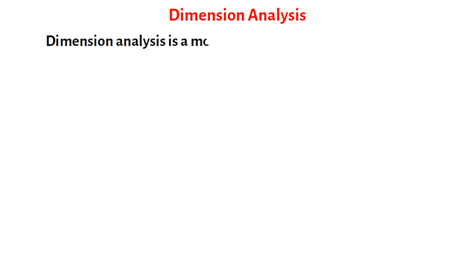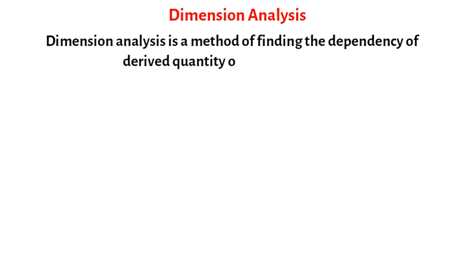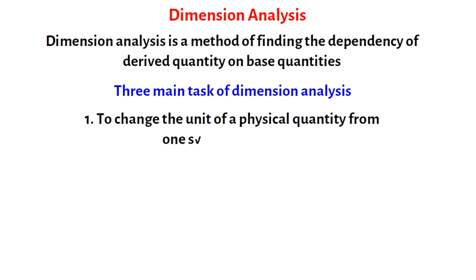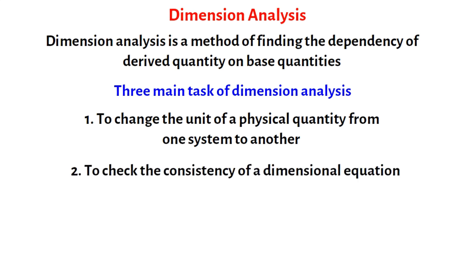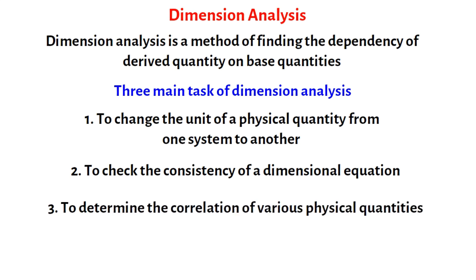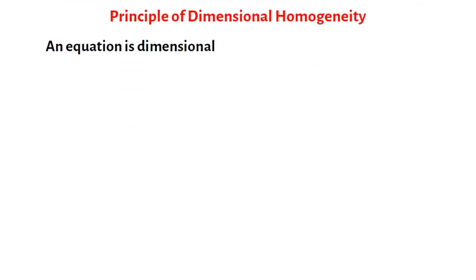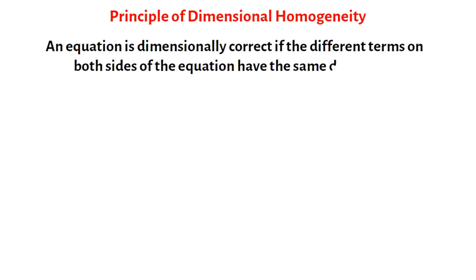Dimensional analysis is a method of finding the dependency of a derived quantity on base quantities. This is a theoretical analysis. Three main tasks can be done with its help: number one, to change the unit of a physical quantity from one system to another; number two, to check the consistency of a dimensional equation; and number three, to determine the correlation of various physical quantities. The principle upon which these tasks depend is known as the principle of dimensional homogeneity. This principle states that an equation is dimensionally correct if the different terms on both sides of the equation have the same dimension.